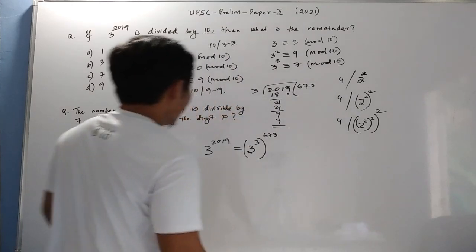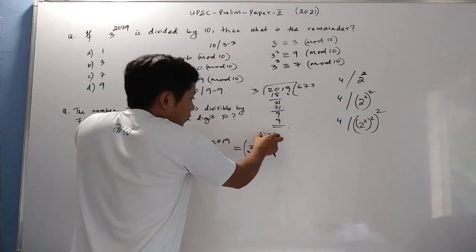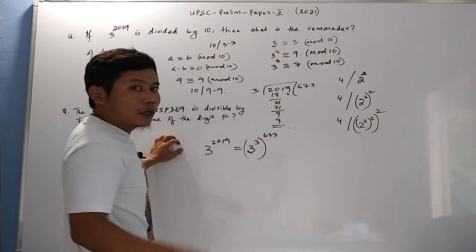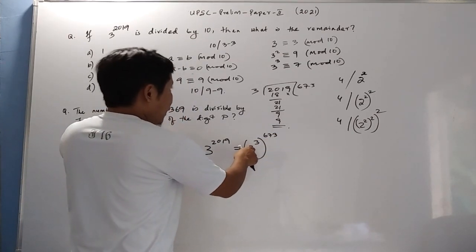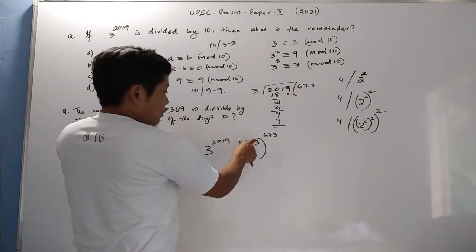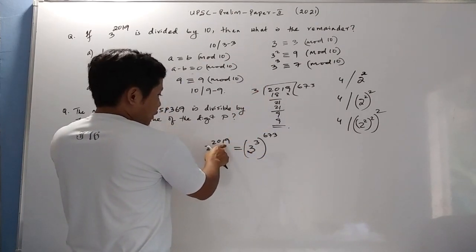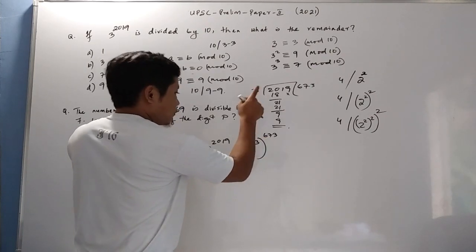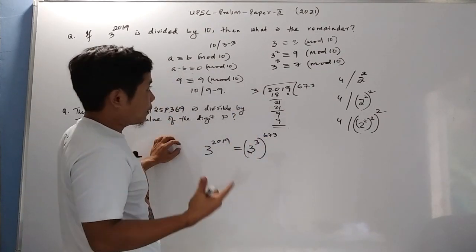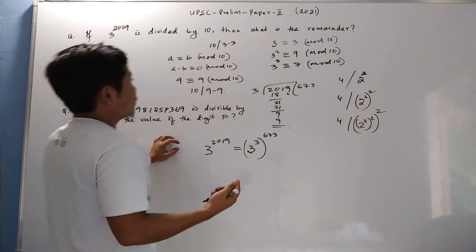So just like that, we are raising the power till 673 and the result or the remainder will still be the same. That means when 10 divides 3 to the power of 2019, which is 3 to the power 3 to the power 673, the remainder will be the same. So the remainder will be 7.